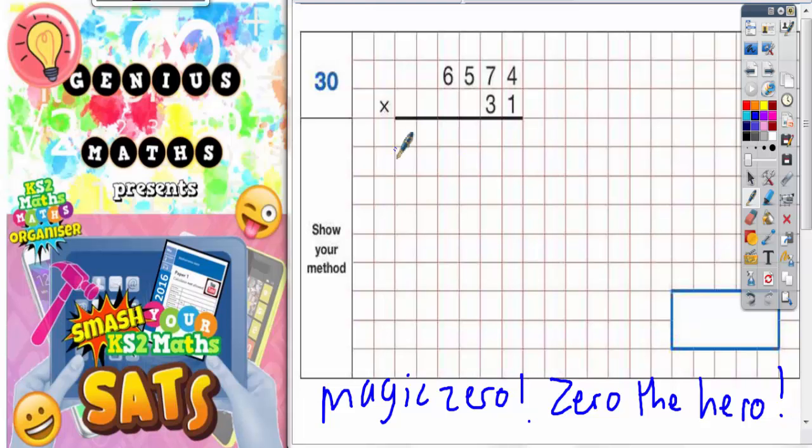So first thing we've got to do is multiply everything by this one here. So we're going to need three lines of working out like this. So let's begin.